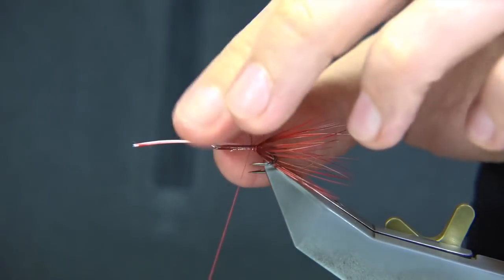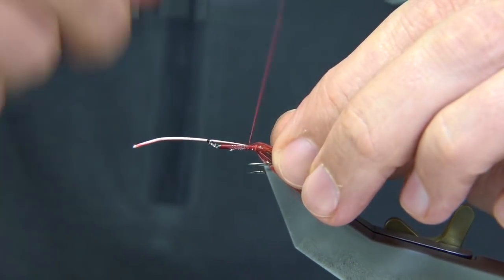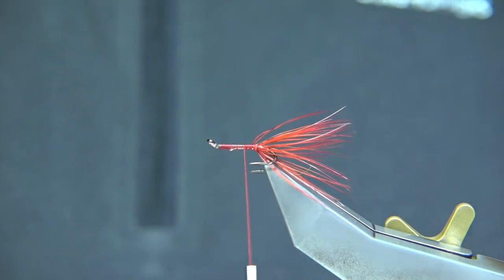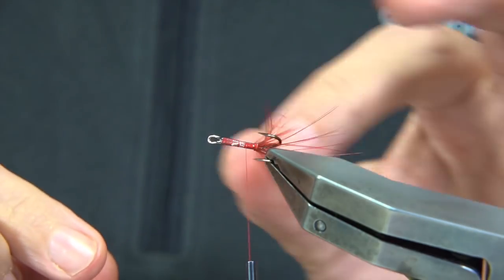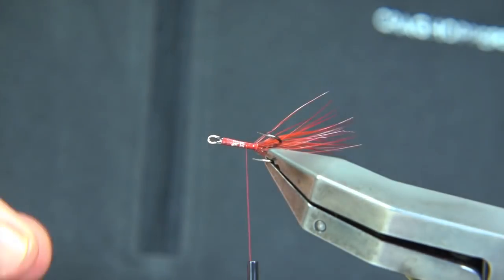Catching the hackle. Wind up halfway and then I usually break it off. You can check the legs of the shrimp tail. There we go, that looks fine.